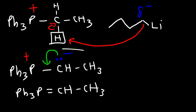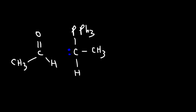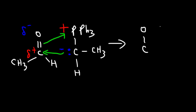For the next step, we use one resonance form of the ilid to react with a ketone or aldehyde — let's use acetaldehyde as an example. The carbon of the ilid has a negative formal charge and the phosphorus has a positive formal charge. The carbonyl carbon is partially positive and the oxygen has a partial negative charge. The nucleophilic carbon attacks the electrophilic carbonyl carbon, breaking the pi bond. Those pi electrons form a bond between oxygen and phosphorus, generating a four-membered ring called an oxaphosphetane.